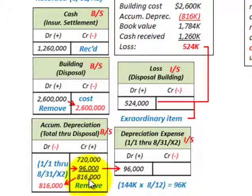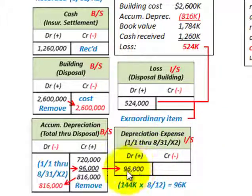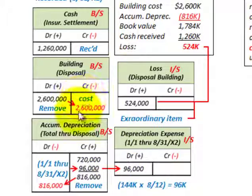We also have to recognize depreciation expense for the year, from 1/1 through 8/31. On the income statement we debit (increase) depreciation expense for $96,000. So at this point we've removed the building off the books and recognized depreciation expense for the partial year.